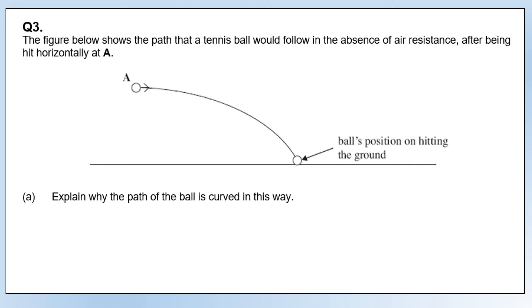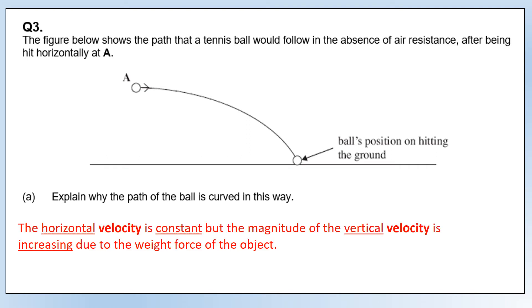There's two parts to explaining the curved shape. First, the object is only acted on by a vertical weight force, so the horizontal velocity is constant. The distance traveled in the horizontal direction is consistent as time goes on. But the vertical velocity is going to be increasing in magnitude due to the weight force, and that's why it has this curved shape—because the vertical velocity is becoming increasingly negative.